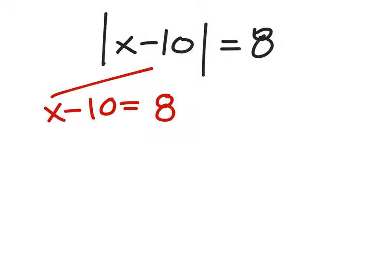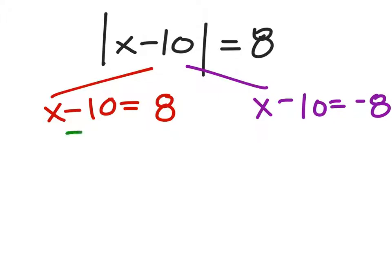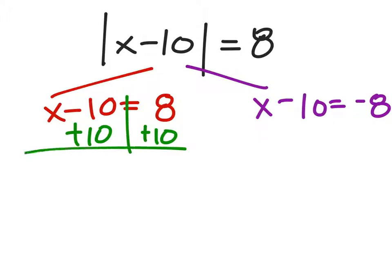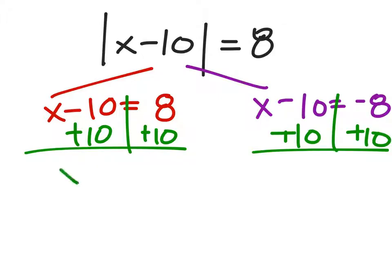On the other hand, we can also have x minus 10 equal negative 8, and it will come out as a positive 8 from the absolute value. From there, I'm going to add 10 to both sides of both equations, giving us x equals 18 and x equals 2.